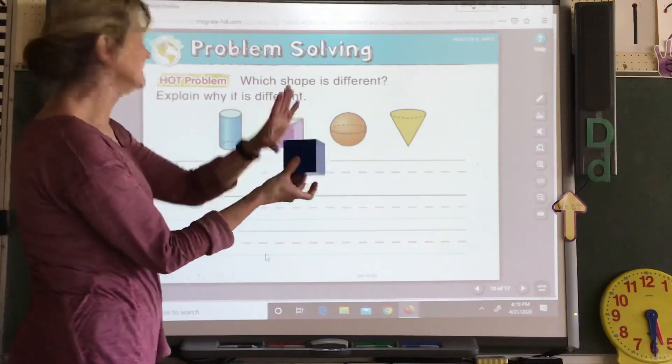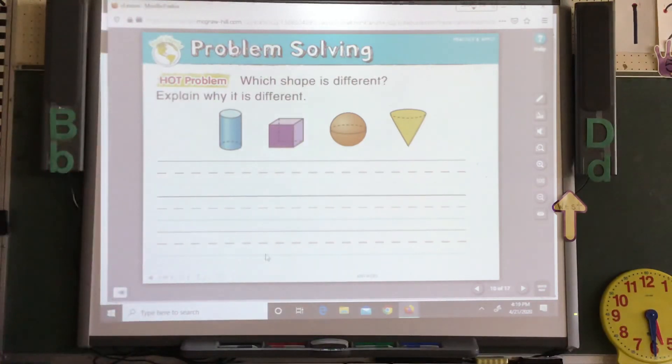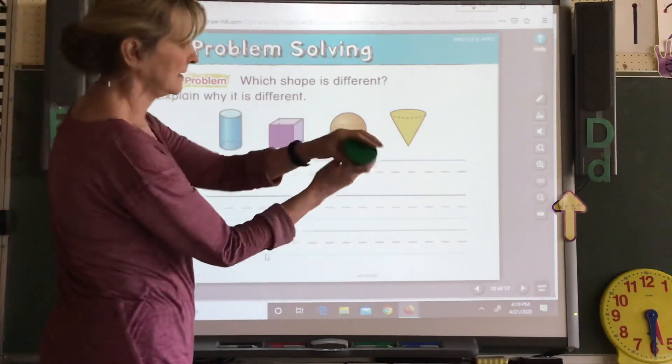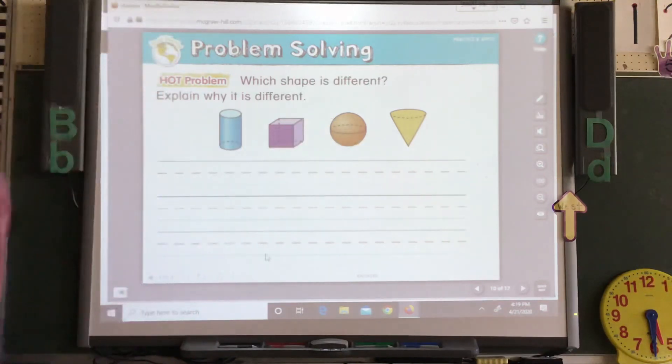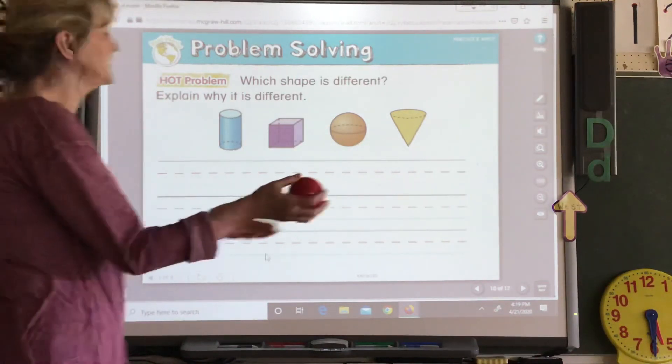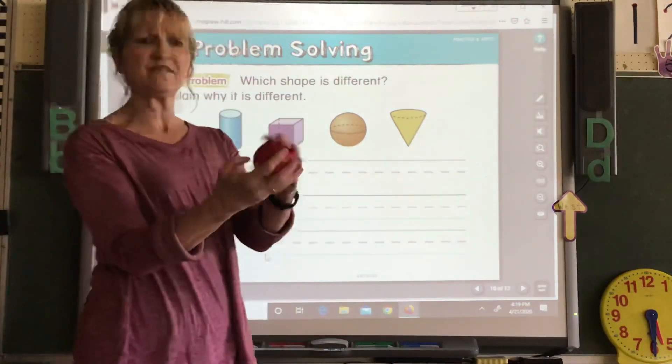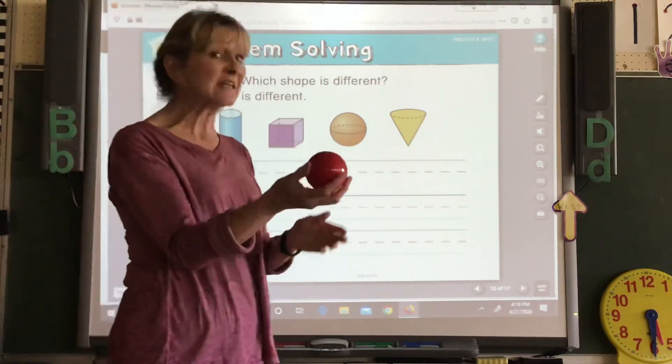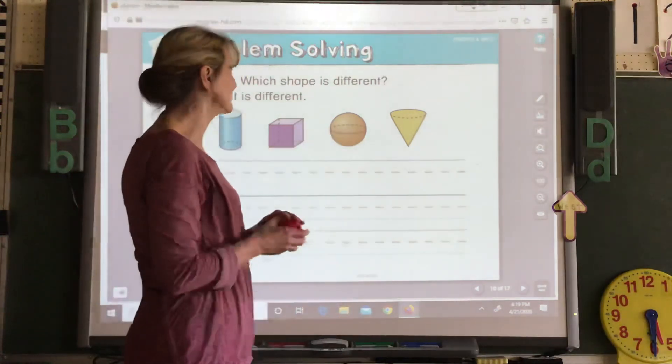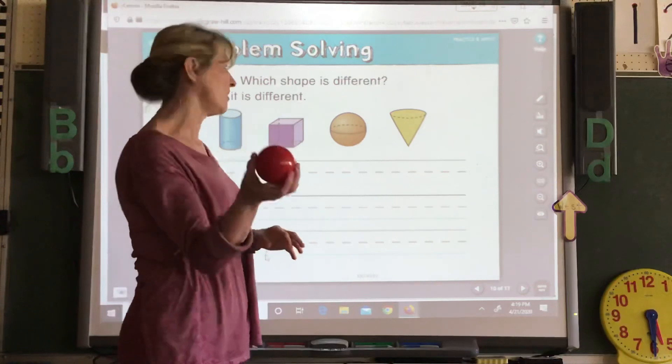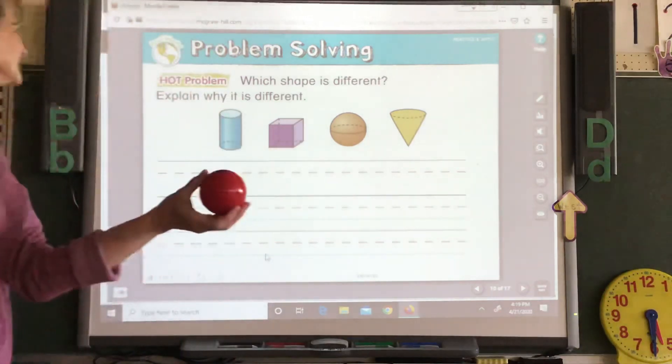The cone has a face, just one, but it does have faces. What about this sphere? Does it have any faces? It doesn't have any. So this is the one that's different because it doesn't have any faces at all. And that's what makes it completely different.